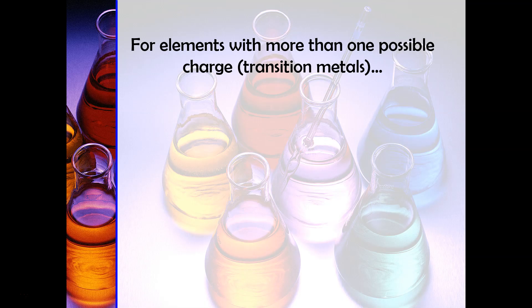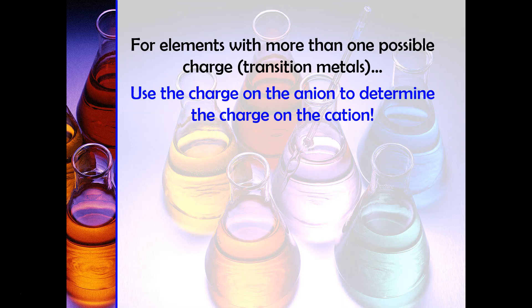Now I want to talk about how to determine when you need a Roman numeral and what that Roman numeral is. This is a skill that sometimes students have a difficult time with. If you have elements that are capable of more than one possible charge, we mostly see those elements in the transition metal section. What I do is focus on what the charge on the anion is, the charge on the non-metals, in order to figure out what the charge is on the metal.